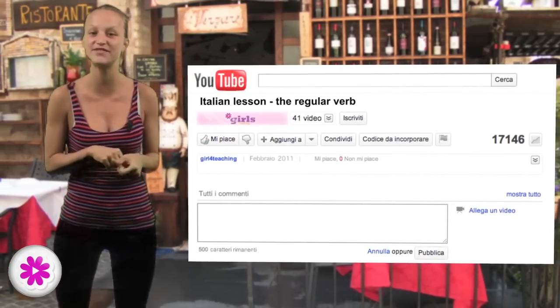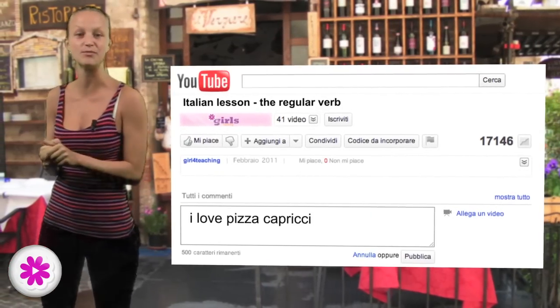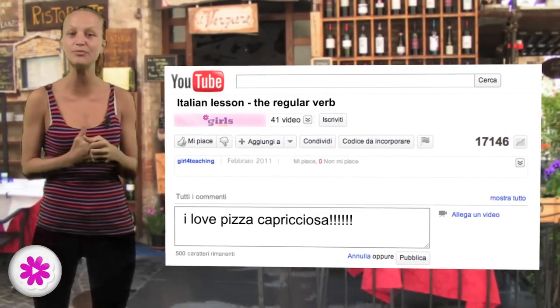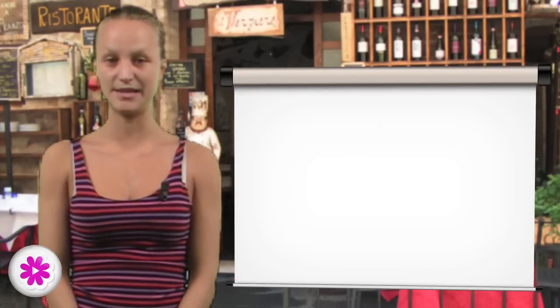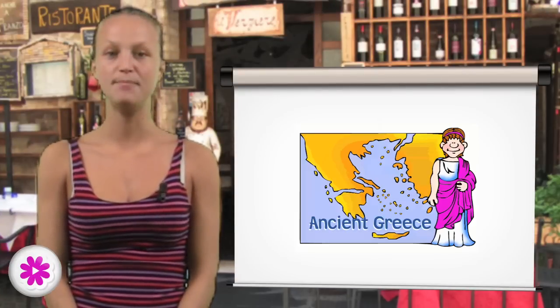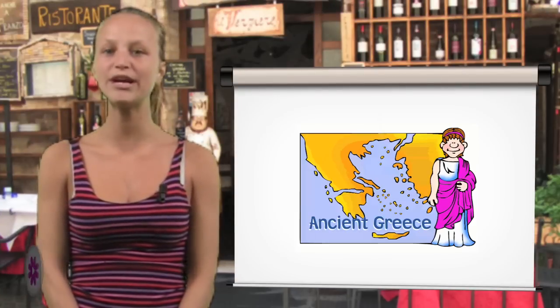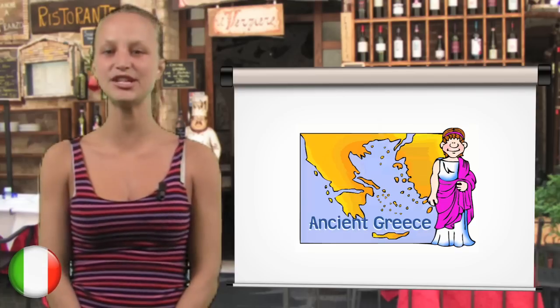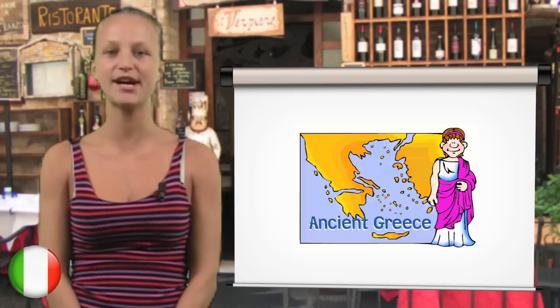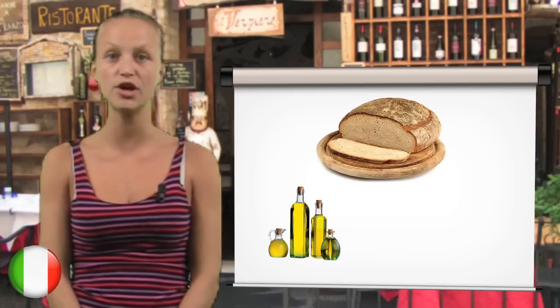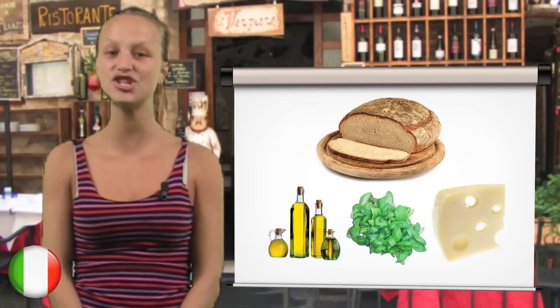Comment on this video and tell me which is the most original pizza you tried. As Italians, we are really proud to be the inventors of the modern pizza. However, its origin can be traced far back in the past. The pizza's ancestor was born with the ancient Greeks, who covered bread with oils, herbs and cheese.